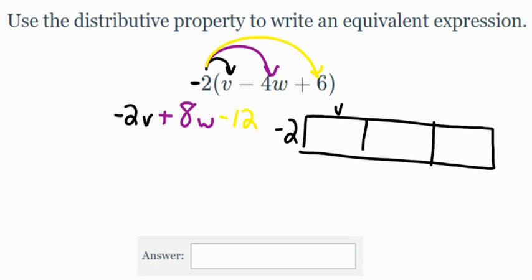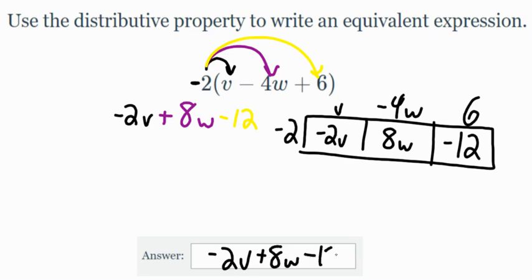So we've got negative 2 up front, we've got v right here, negative 4w right here and 6. Negative 2 times v is negative 2v, negative 2 times negative 4w is going to be 8w, negative 2 times 6 is going to be negative 12. Same answer, just different methods. So our final answer would be negative 2v plus 8w minus 12. So that was our video on the distributive property. I hope you enjoyed it and I hope you learned something.